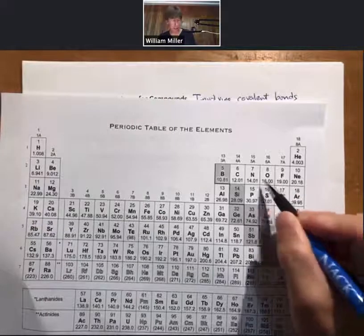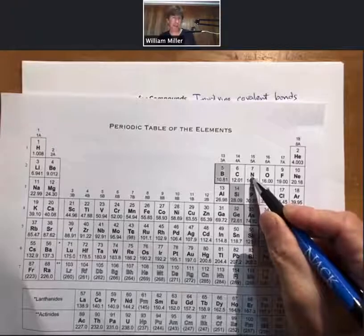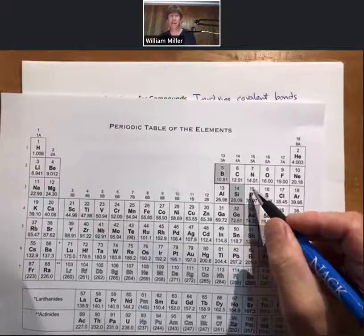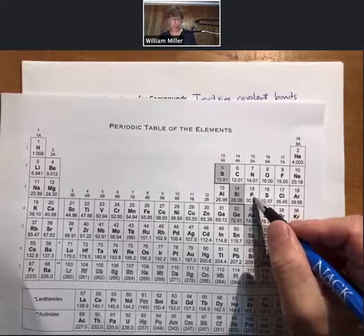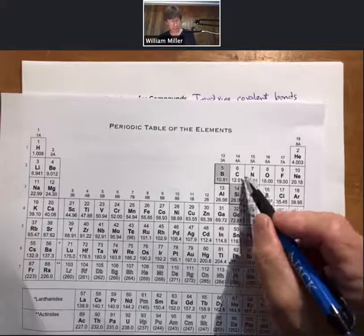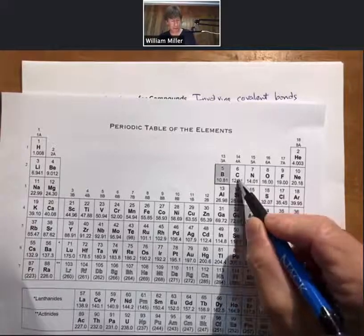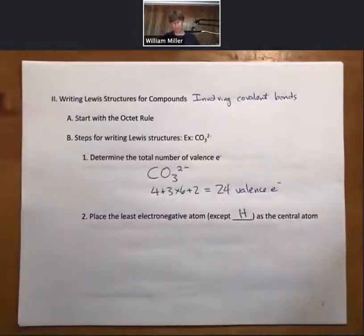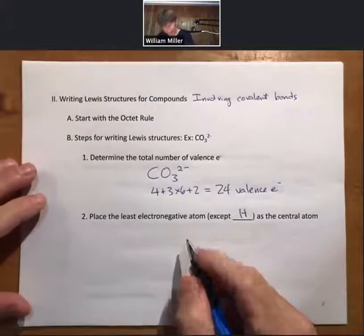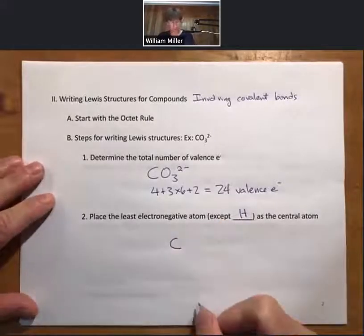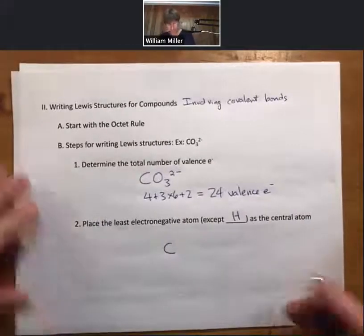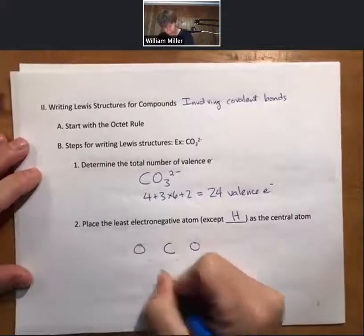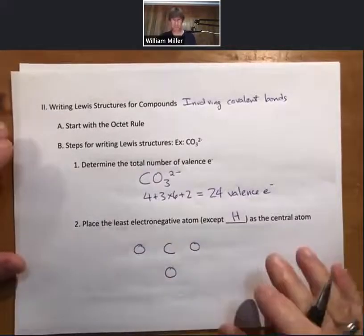However, what's clear from this case is that carbon is less than oxygen, less electronegative. So place the least electronegative atom as the central atom. That means I'm going to put the oxygens around it. That's step two.